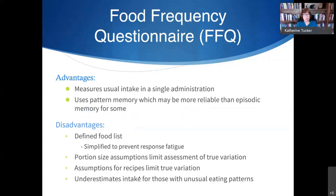Now the food frequency questionnaire has advantages. It can measure usual intake in a single administration — this is why most cohort studies use it. And it uses pattern memory, which can be more reliable than episodic memory. You tend to plan your meals for the week and know what you usually eat for breakfast, lunch, and dinner. It's easier to remember that than all the details of your lunch yesterday.